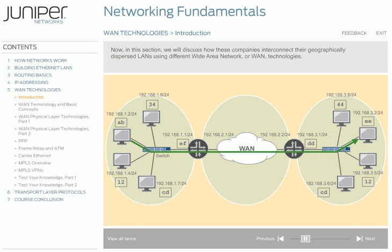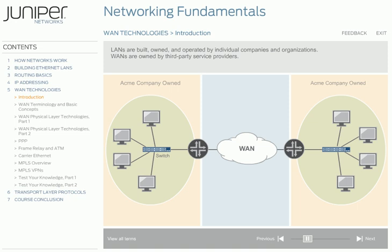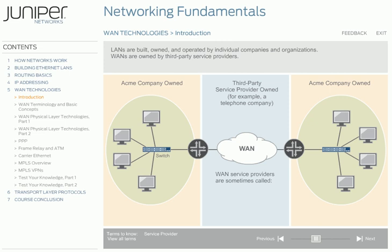One key difference between a LAN and a WAN is that LANs are built, owned, and operated by individual companies and organizations. But unlike LANs, WANs are owned by third-party service providers. A company wanting to connect its geographically dispersed LANs must subscribe to a WAN service provider, such as a telephone company, to use or lease its WAN carrier network services. WAN service providers are also called service providers, telcos, WAN carriers, or just plain carriers. A company then uses the data links provided by these service providers to connect remote locations to each other or to access the Internet.